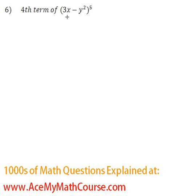Find the fourth term of the expansion 3x minus y squared to the 5. Here is our formula for term number k plus 1. And that's n choose k times the first term to the power of n minus k, and the second term to the power of k.